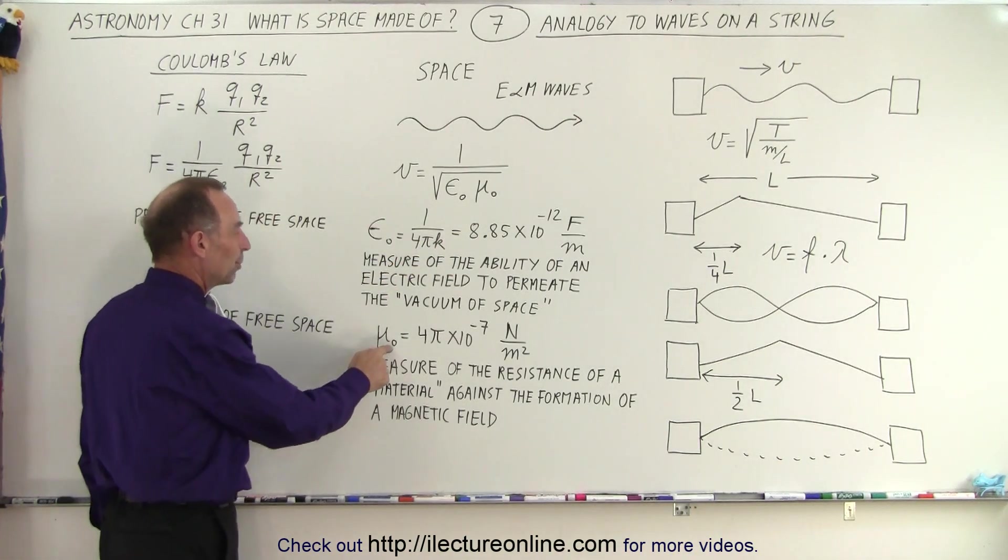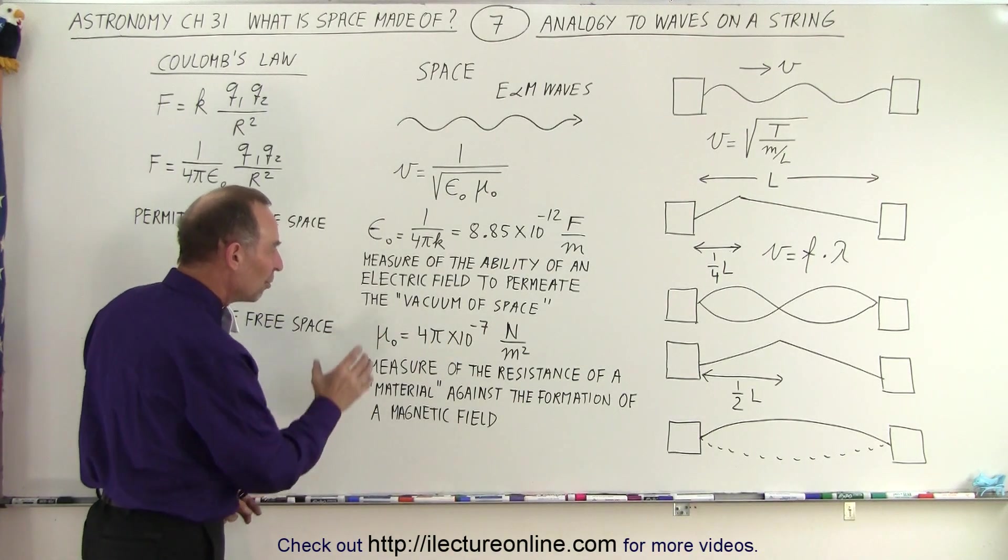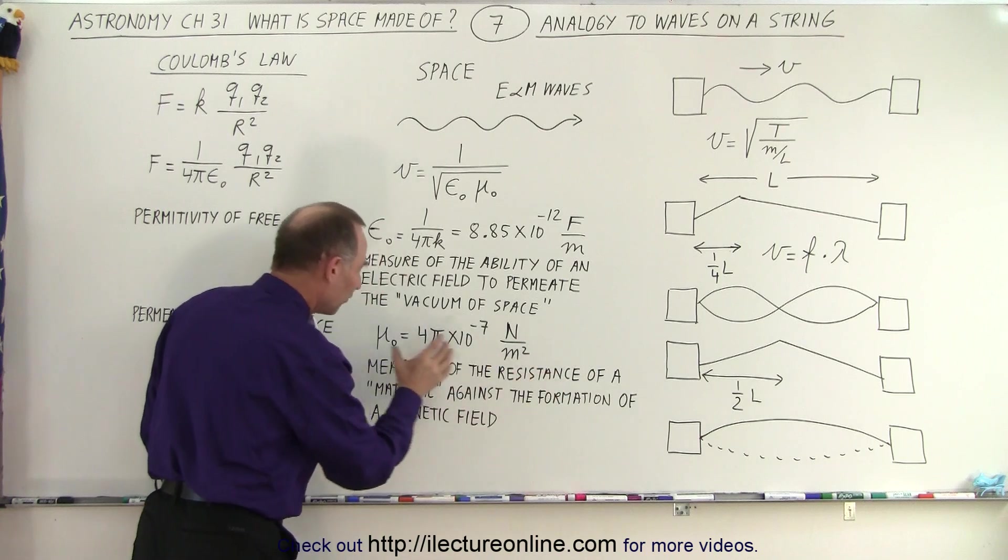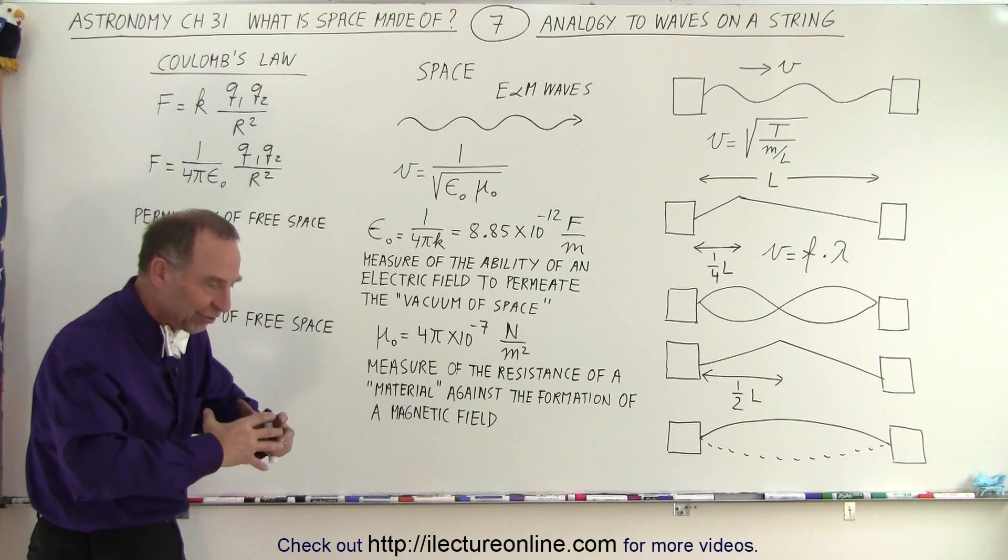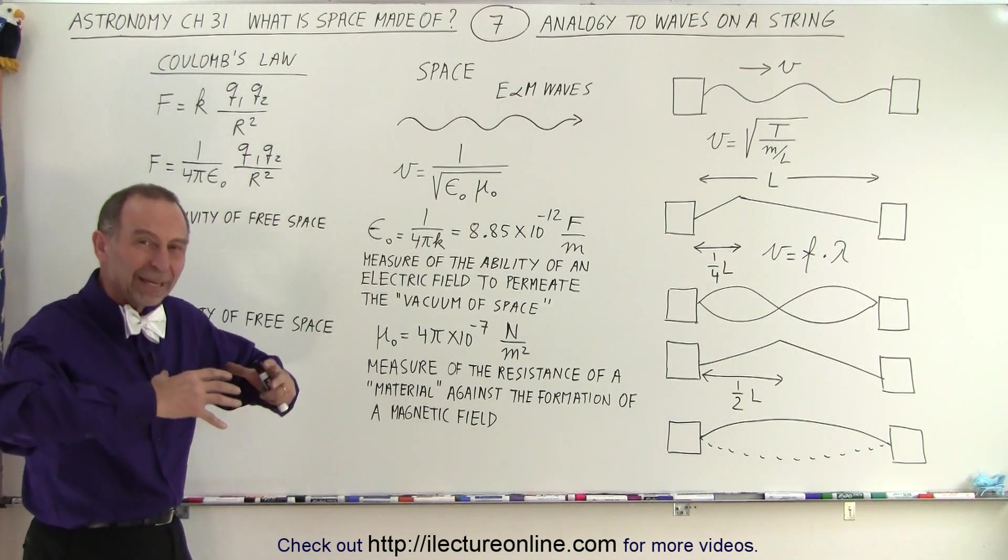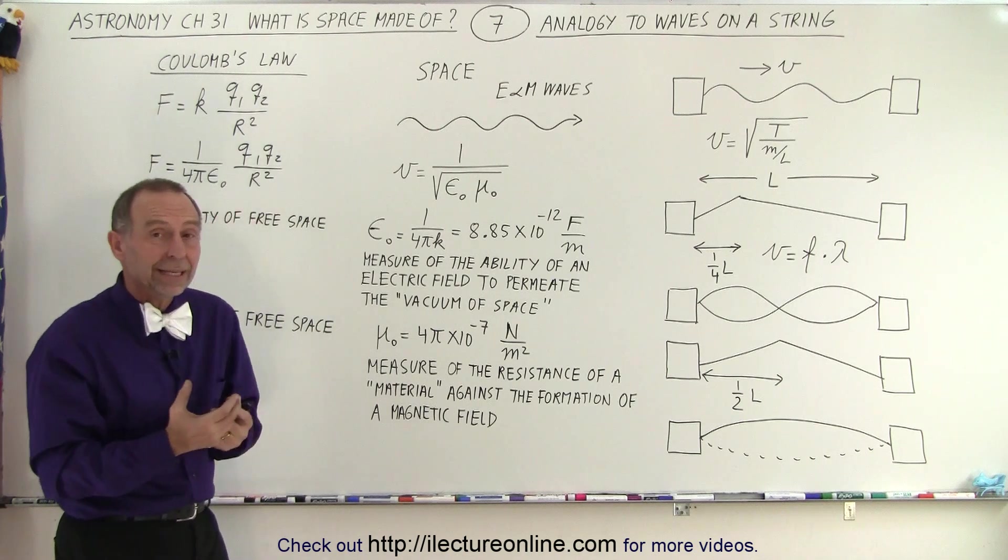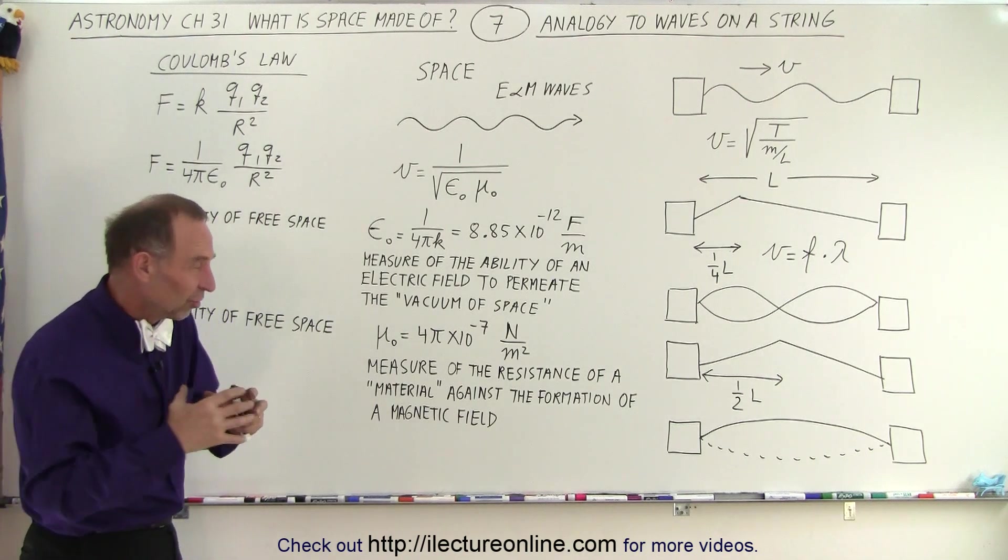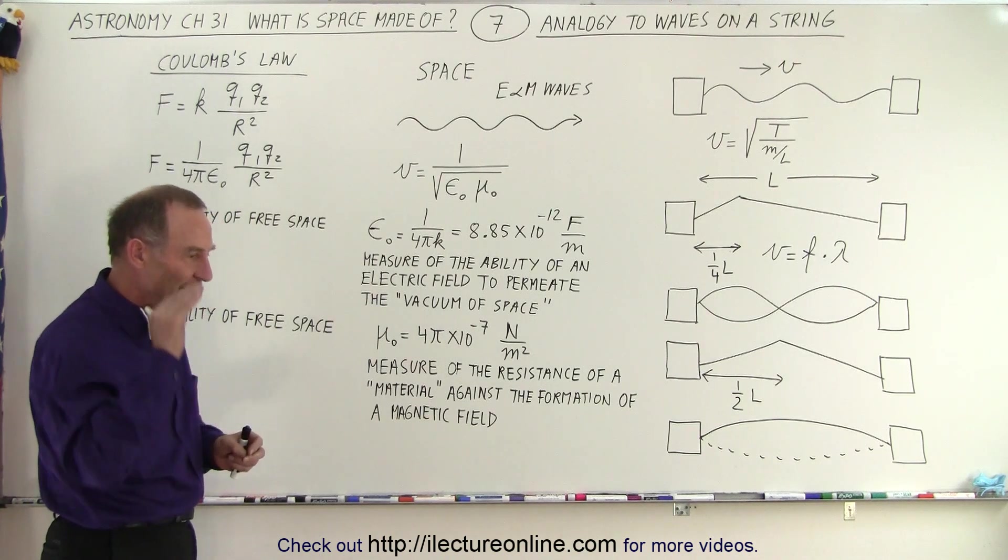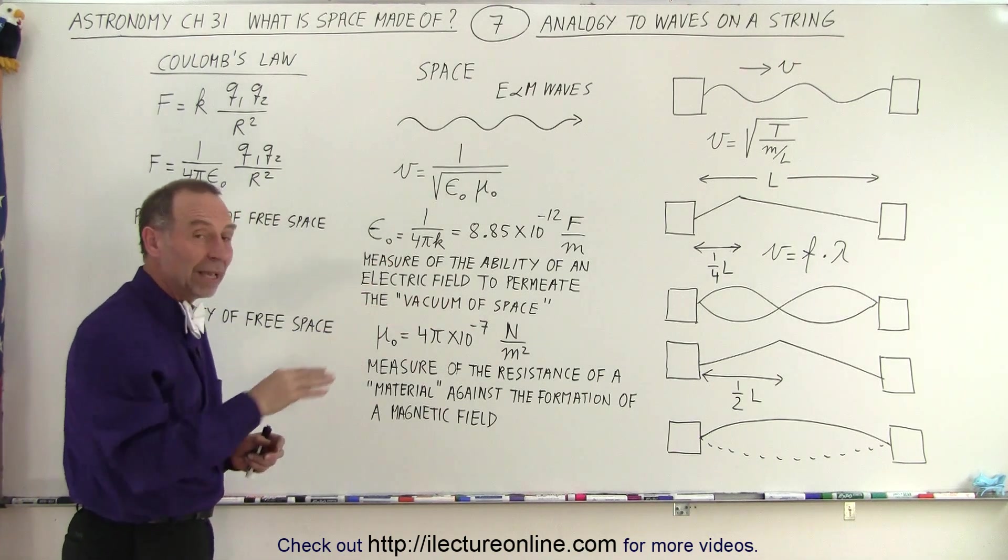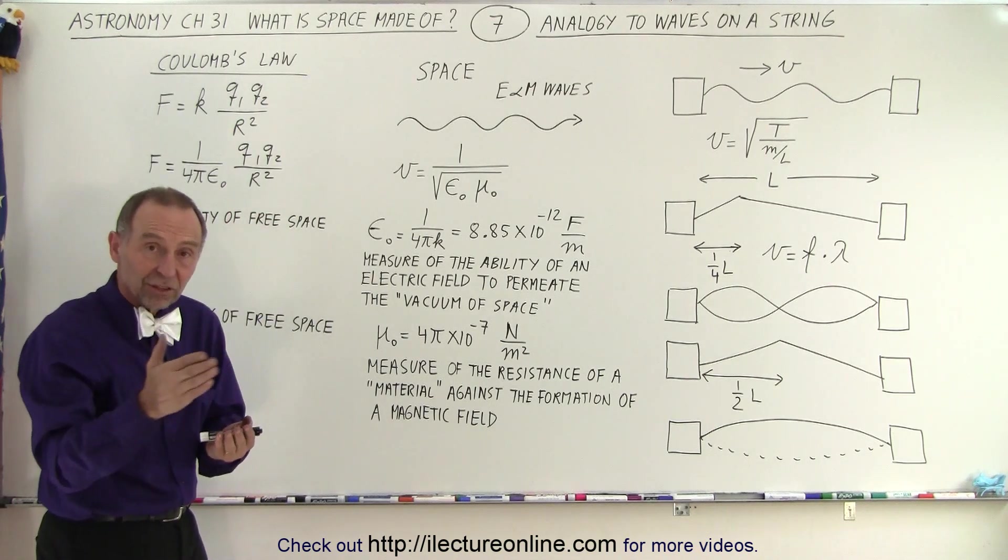Then mu sub not, the permeability of free space. The permeability of free space is a measure of the resistance of a material against the formation of a magnetic field. So when a magnetic field builds up in space, well space has some sort of property that has a certain amount of resistance to the build-up of that magnetic field.